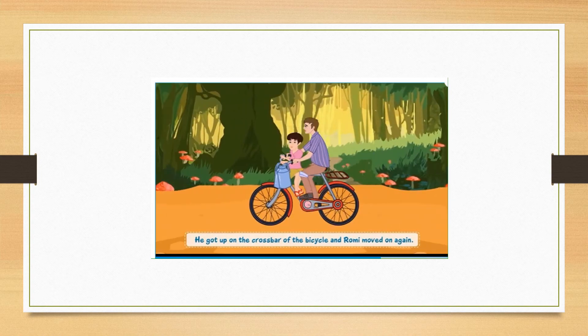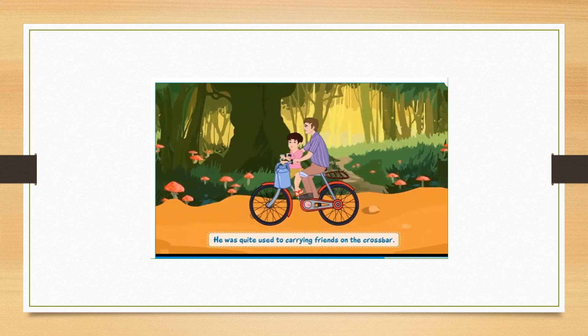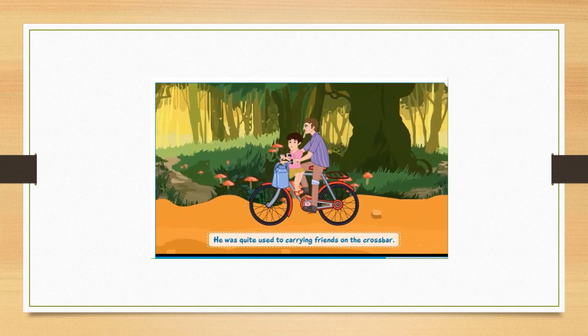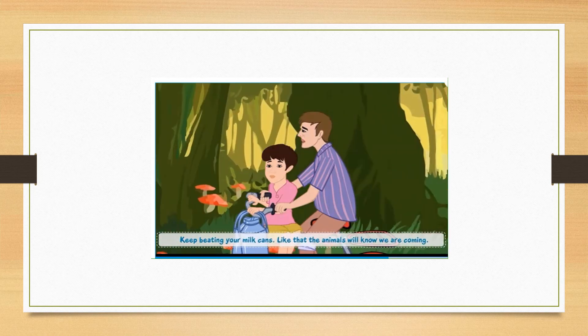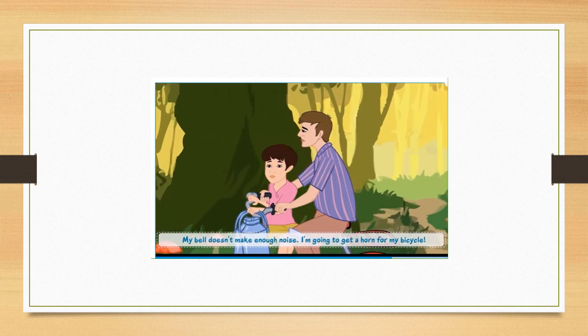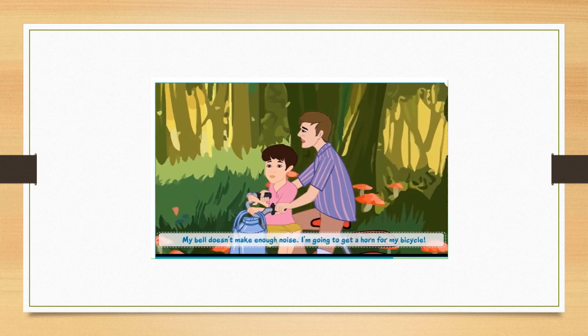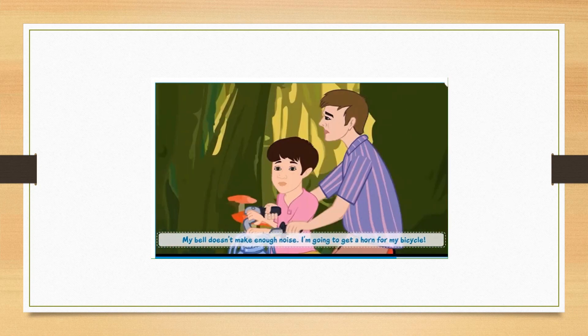He got up on the crossbar of the bicycle and Romy moved on again. He was quite used to getting friends on the crossbar. Romy, keep beating your milk cans. Like that, the animals will know we are coming. My bell doesn't make enough noise. I am going to get a horn for my bicycle.